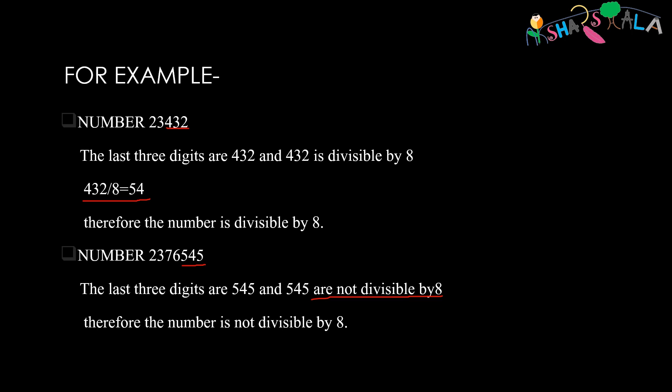Taking our next example, we have a larger number. So we just see the last three digits of the number and check the divisibility by 8. If they are divisible by 8, then the whole number is divisible by 8. If not, then the number is not divisible by 8. We have a number 2376545. The last three digits are 545. And 545 is not divisible by 8. Therefore, the number is not divisible by 8.